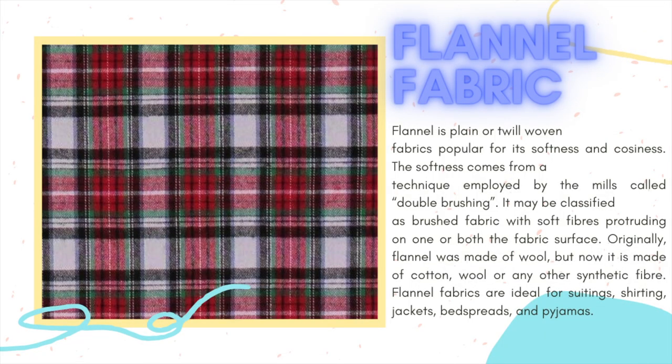Flannel fabric. Flannel is a plain or twill-woven fabric popular for its softness and coziness. The softness comes from a technique employed by the mills called double brushing. It may be classified as a brushed fabric with soft fibers protruding on one or both fabric surfaces. Originally, flannel was made of wool, but now it is made of cotton, wool, or any other synthetic fabric or fiber. Flannel fabrics are ideal for suitings, shirting, jackets, bedspreads, and pyjamas.